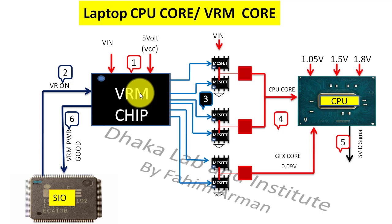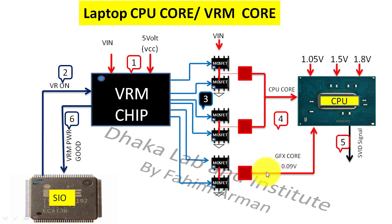If we get VRM power good and the CPU core voltage is present in all the coils, and the graphics core voltage is present in this coil, then we can be sure that this section is fine. So this was the discussion and I think it will be very helpful for you. Thank you very much for watching and please subscribe to my channel.